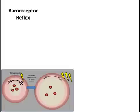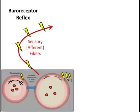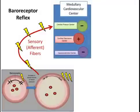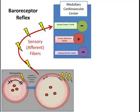Afferent fibers from these receptors travel to the cardiovascular center. When the baroreceptors are stretched, they increase their frequency of action potentials sent to the cardiovascular center in the medulla. Within the medulla and pons, the cardiovascular center integrates information from the afferent fibers. There are three main centers within this region: the cardiac pressor center, the cardiac depressor center, and the vasoconstrictor center.